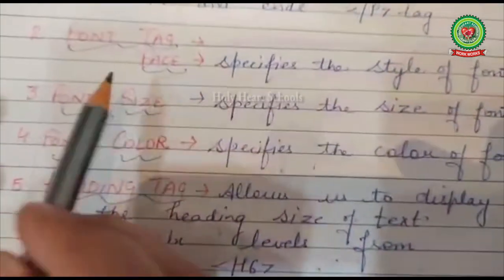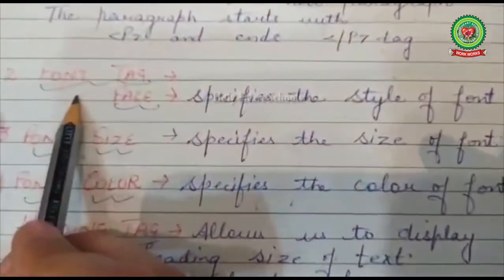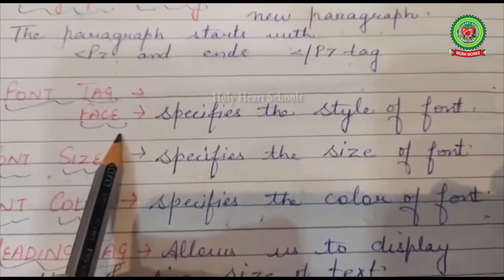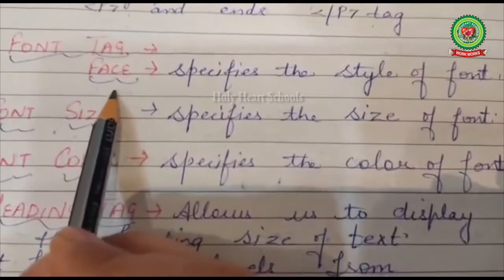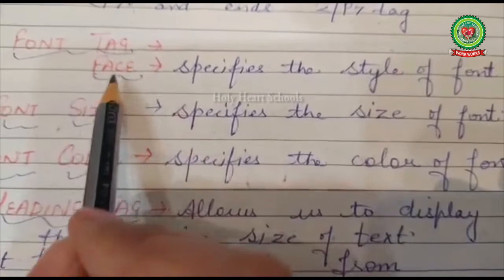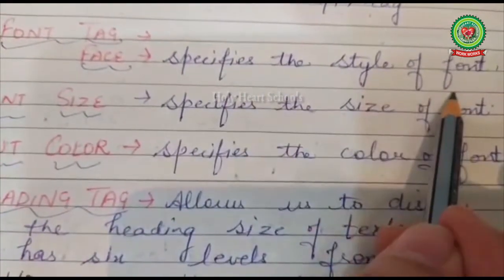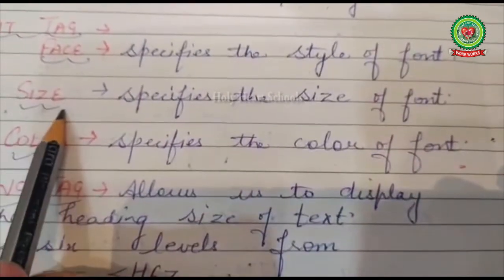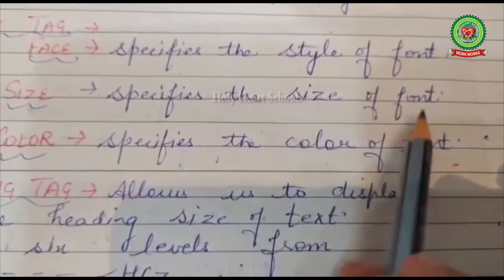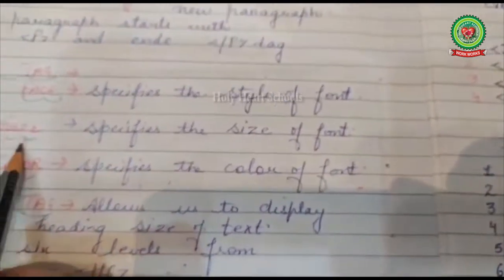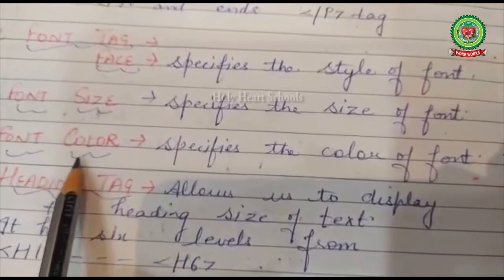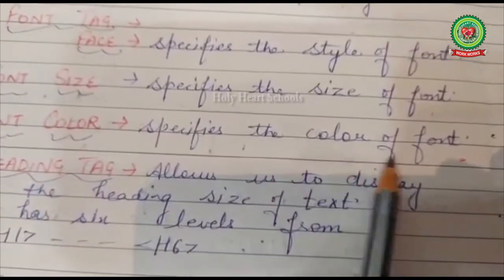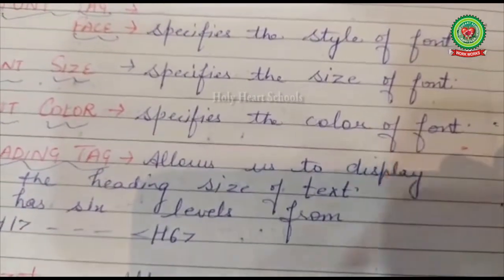We will also apply formatting using the font tag. The first attribute is 'face', which specifies the style of the text — like Algerian, Arial, Times New Roman, or Jokerman, similar to fonts in MS Word. Next is 'size', which specifies the size of the font. The maximum size is 7 and the minimum is 1. Finally, 'color' specifies the color of the font — you can apply any color.